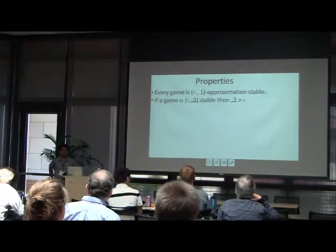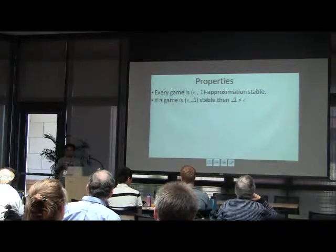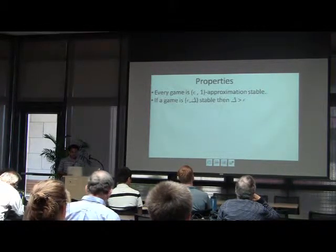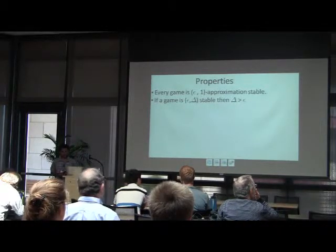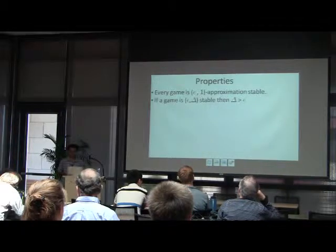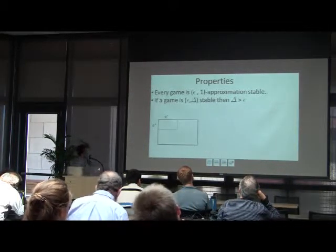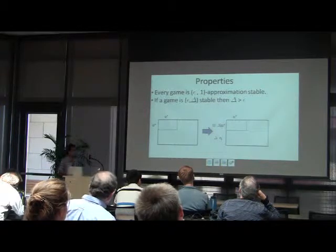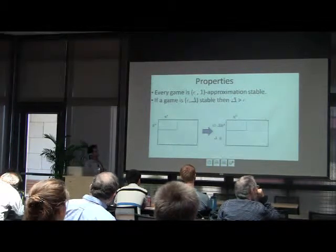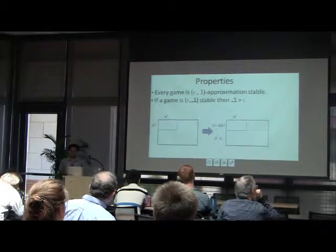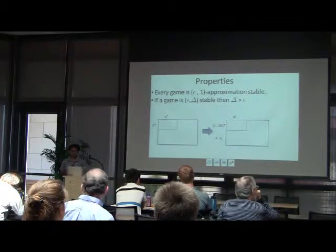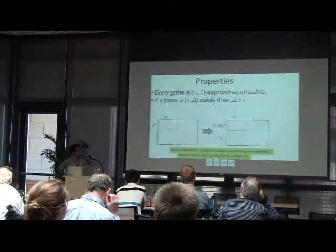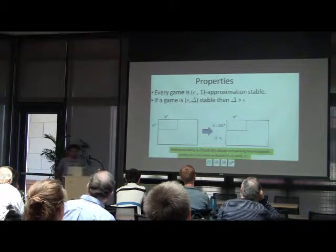Some properties of such games: every game is epsilon-1 stable, since any two distributions have variation distance at most one, so delta equals one captures all games. Also, for this definition to make sense, delta has to be at least epsilon. To see why: consider a game where P-star Q-star is a Nash equilibrium, and take delta probability mass from P-star and place it on some row e_i not in the support of P-star. This pair of strategies is delta far from the Nash equilibrium and is also a delta approximate Nash equilibrium, since with probability 1 minus delta both players are playing best response to each other. So if the game is stable, delta must be at least epsilon.